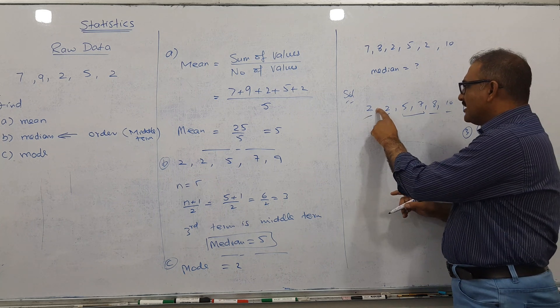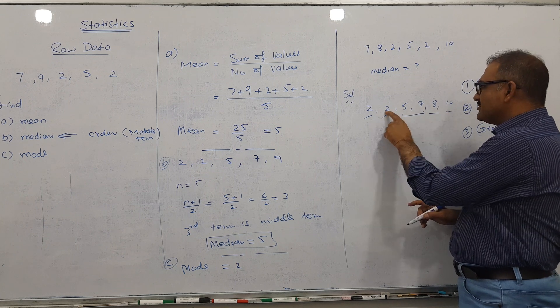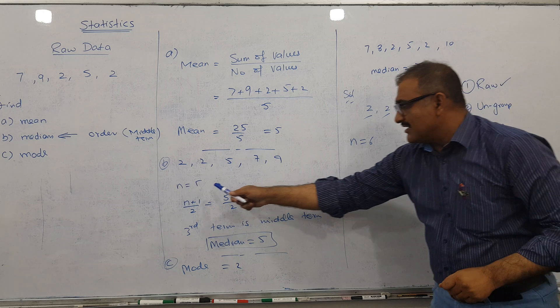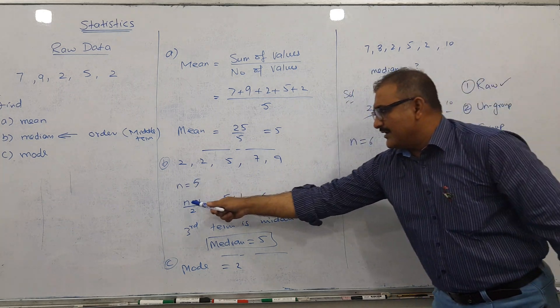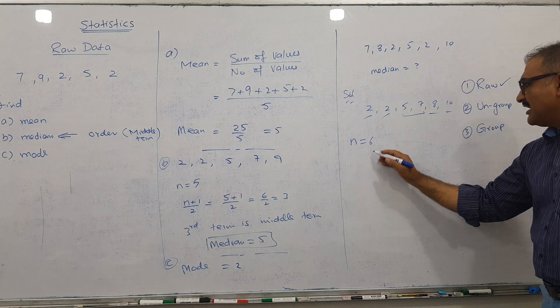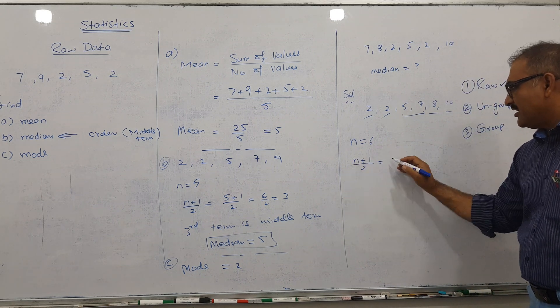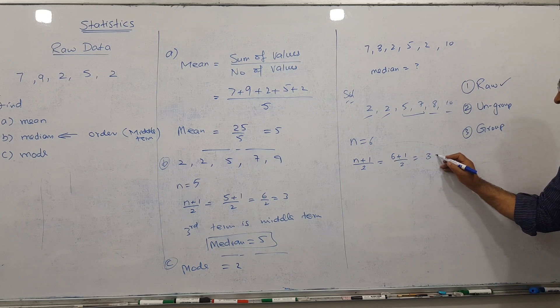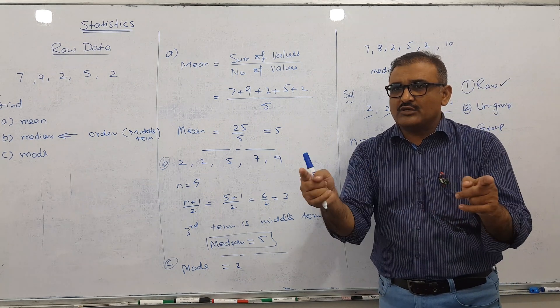One, two, three, four, five, six, so n is 6. The formula we have is n plus 1 divided by 2. When I put 6 here, 6 plus 1 divided by 2, I get 3.5. Do you know 3.5 is the average between two numbers?